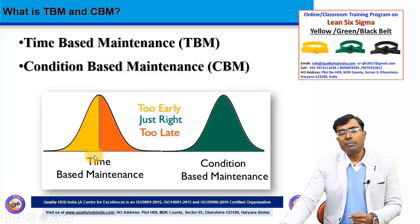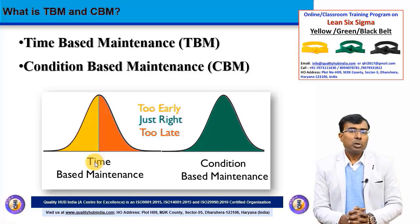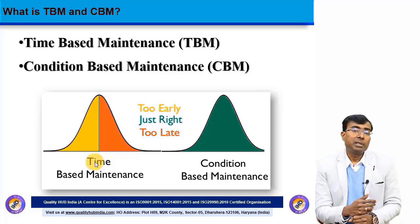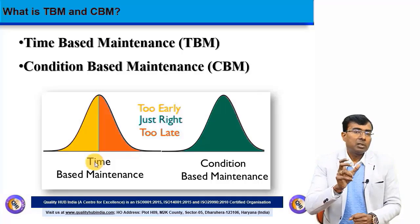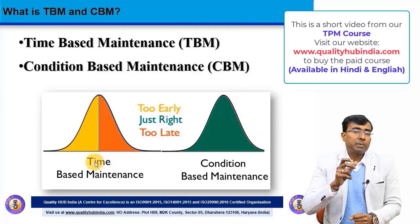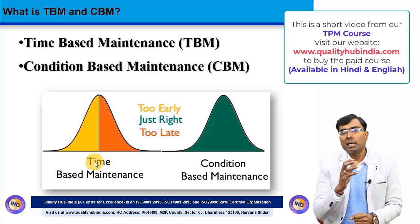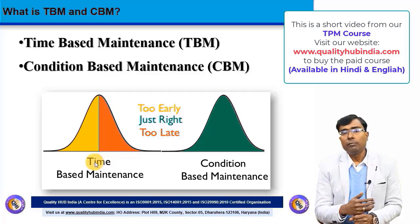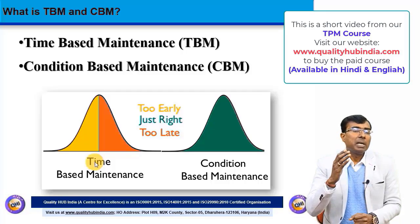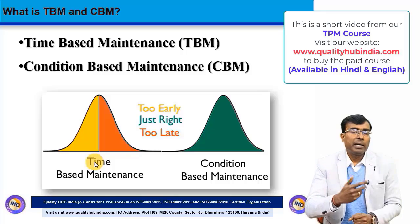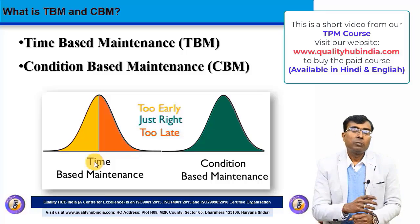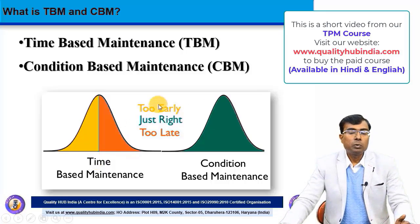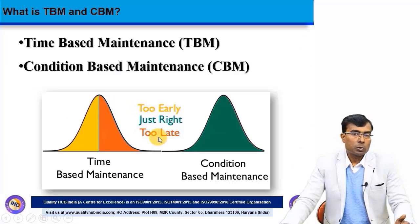When we talk about time-based maintenance, it might be done at the right time, but in most cases it is done either too early or too late. We are not assessing the actual condition of the equipment. For example, there may be a feature of the machine that needs to be verified on a weekly basis, but if the preventive maintenance schedule is set to every quarter, we are not checking those features that require immediate attention. So time-based maintenance may be too early for some equipment and too late for others.